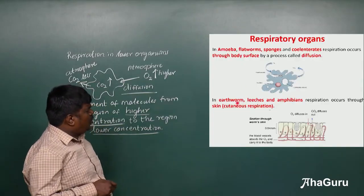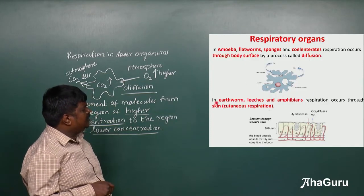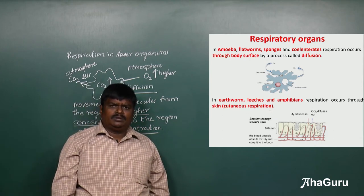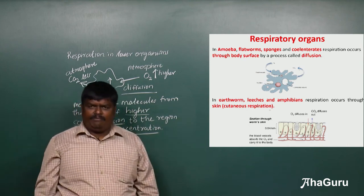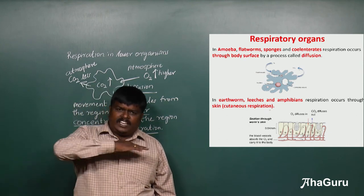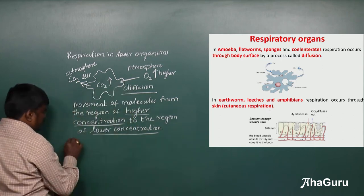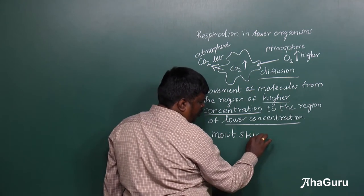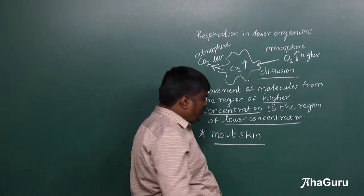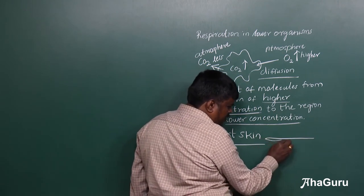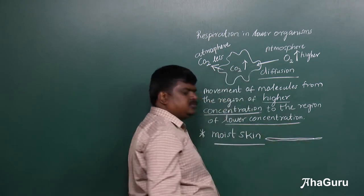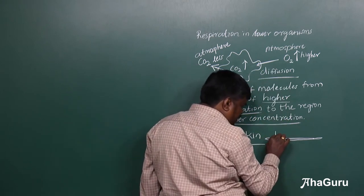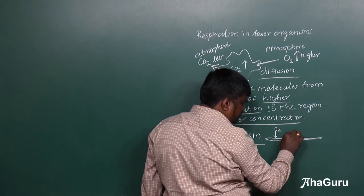Whereas in the case of earthworms, leeches, and amphibians, they respire through their skin. If you observe earthworms, leeches, and amphibians like frogs, the skin is always moist — they have a moist skin. With the help of this moist skin, by the same diffusion process, oxygen enters inside and carbon dioxide leaves outside.